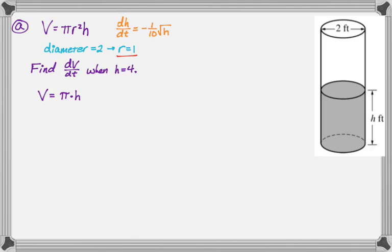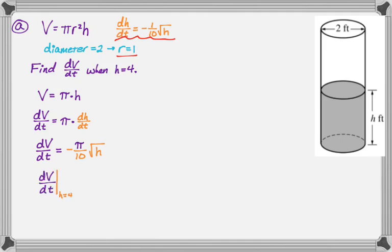Now what I wanna do is find dV/dt. So I'm gonna find the derivative of everything with respect to t. So dV/dt is gonna be pi times dh/dt. And that's important because dh/dt was given to us as a function up here. So dV/dt is actually pi times negative one-tenth radical h. So I just make it negative pi over 10 root h.